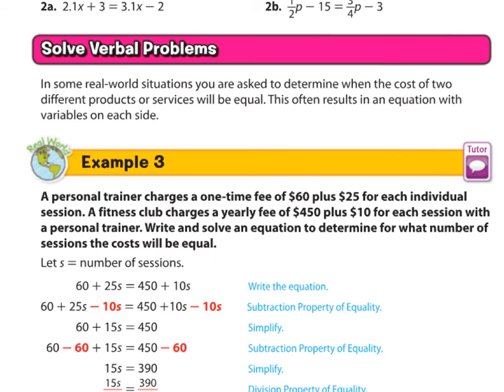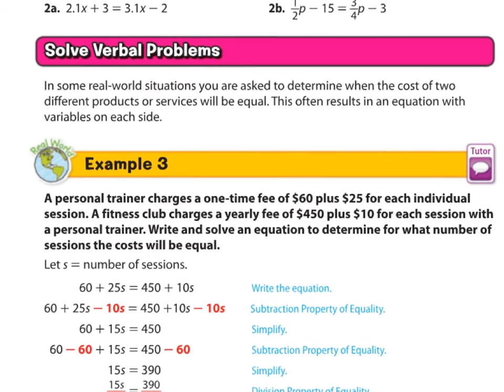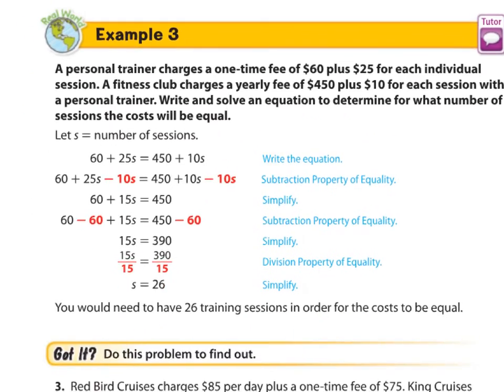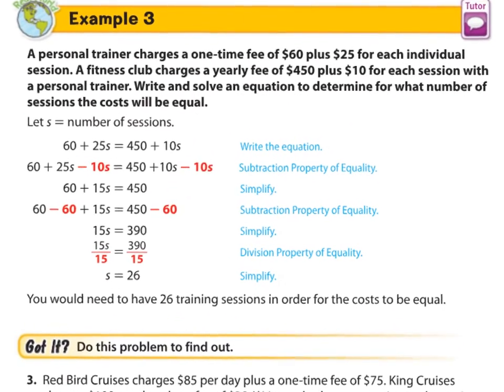And now let's take our skills to solve some verbal problems. In some real-world situations, you are asked to determine when the cost of two different products or services will be equal. This often results in an equation with variables on each side. So we might get two different situations, and they're both increasing or decreasing, and we want to find out when they will both be equal.